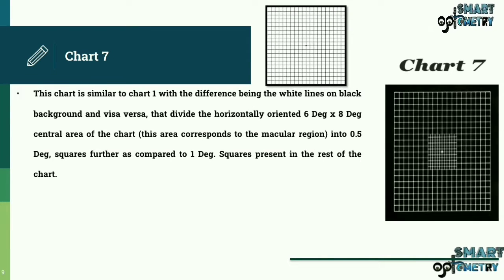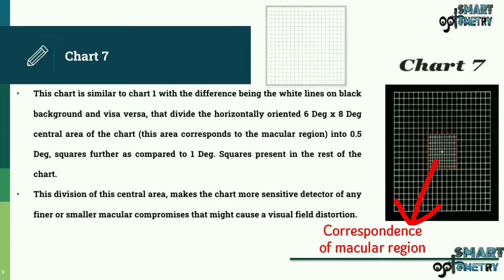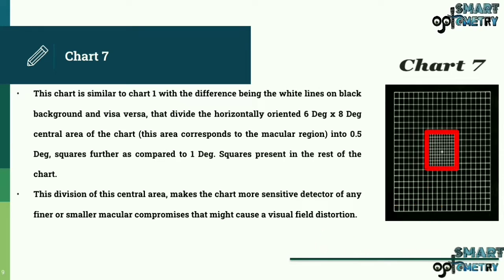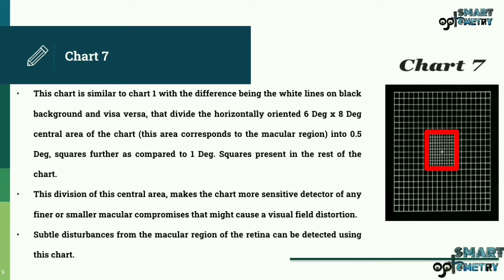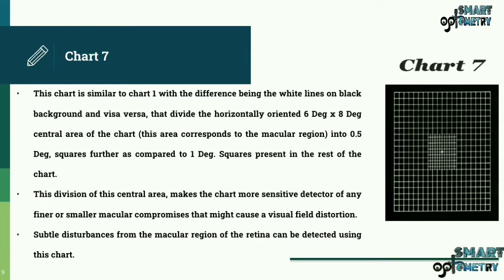Chart 7. This chart is similar to chart 1 with the difference being the white lines on black background and vice versa that divide the horizontally oriented 6 degrees by 8 degrees central area of the chart. This is the area that corresponds to the macular region in 2, 0.5 degree squares further, as compared to 1 degree squares present in the rest of the chart. This division of the central area makes the chart more sensitive detector of any finer or smaller macular compromises that might cause a visual field distortion. Subtle disturbances from the macular region of the retina can be detected using this chart. Here you can see the Amsler's chart with white lines on black background that divide the horizontally oriented 6 degrees by 8 degrees central area of the chart into 0.5 degree squares.